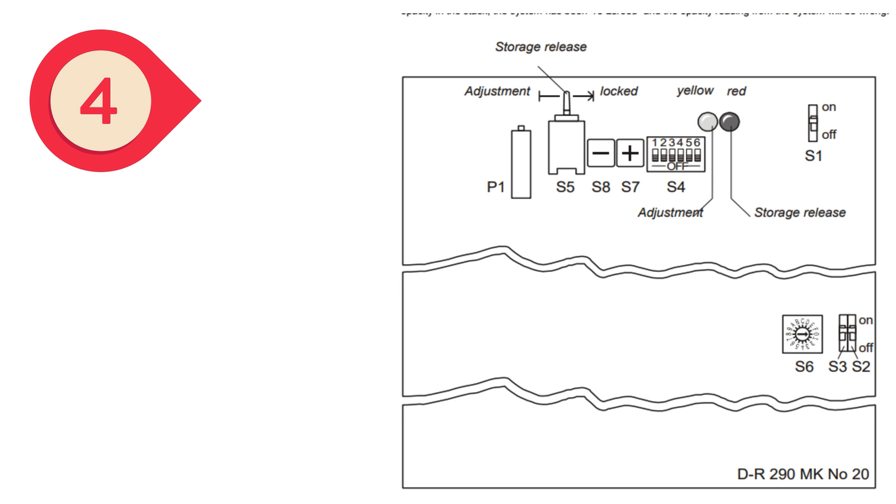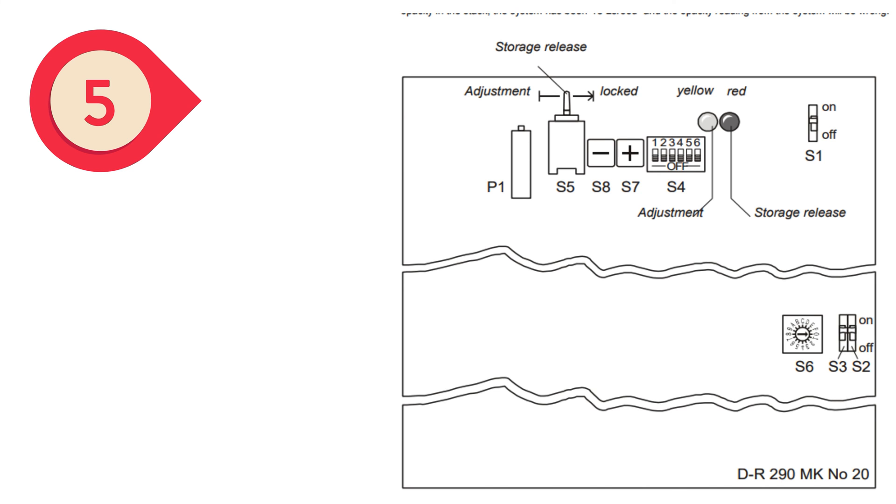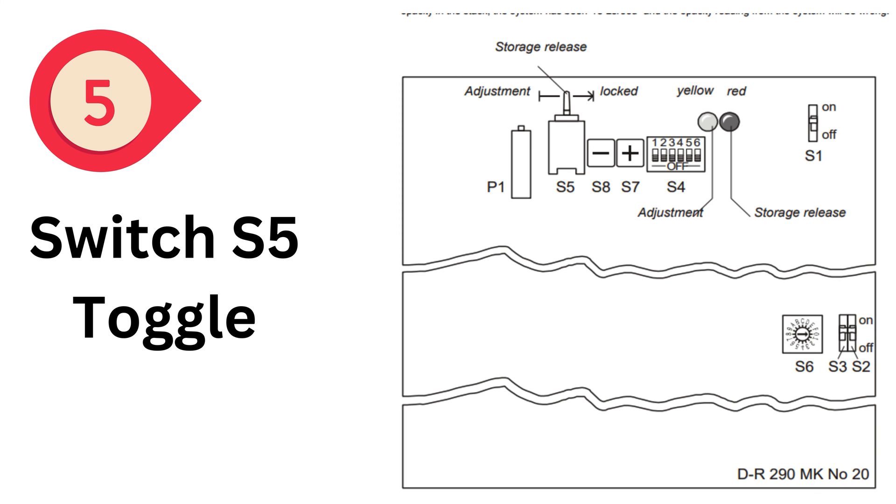Step four: Put switch S3 calibration function to the on position. Step five: Toggle switch S5 must be set to free memory access so that the red LED lights. The first line of the display should alternate between offset plus and window check.